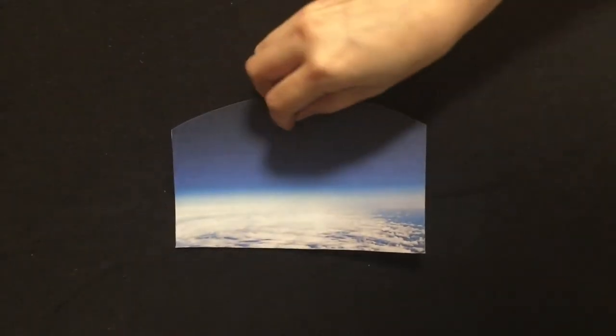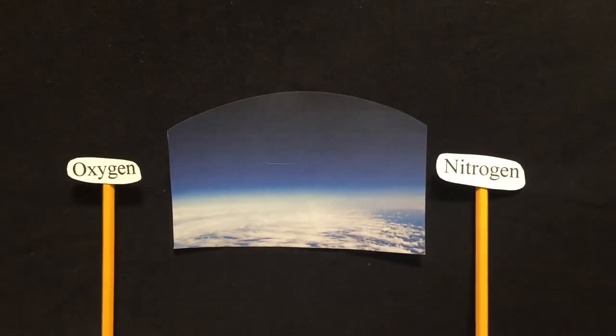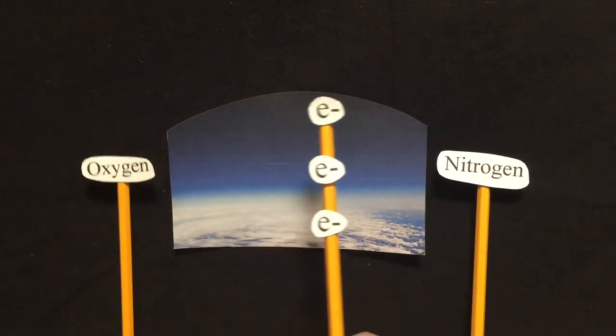Most of our atmosphere is comprised of oxygen and nitrogen in their gaseous form. As the solar wind makes its way into our atmosphere, it excites the gas and increases its energy.